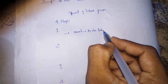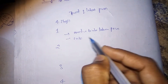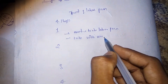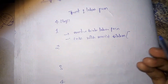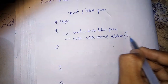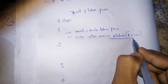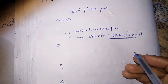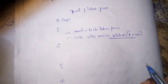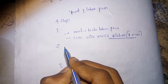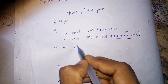Stage one starts with true labor pains and ends with cervical dilation. The dilation of the cervix should be 10 centimeters. This is a very important point — 10 centimeters of cervical dilation is seen at the end of the first stage of labor.